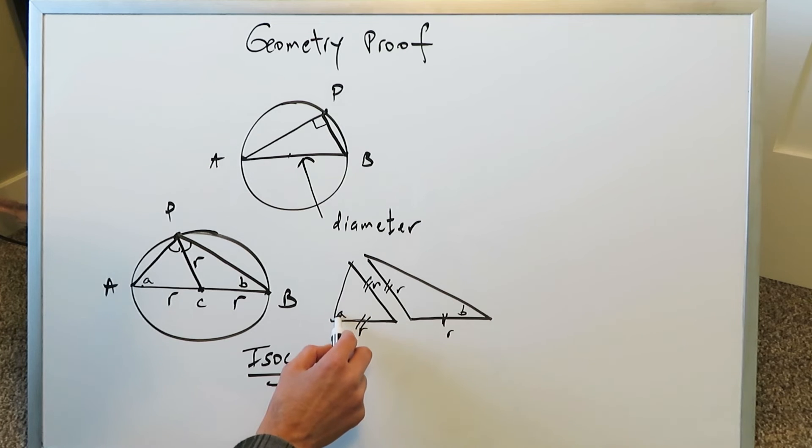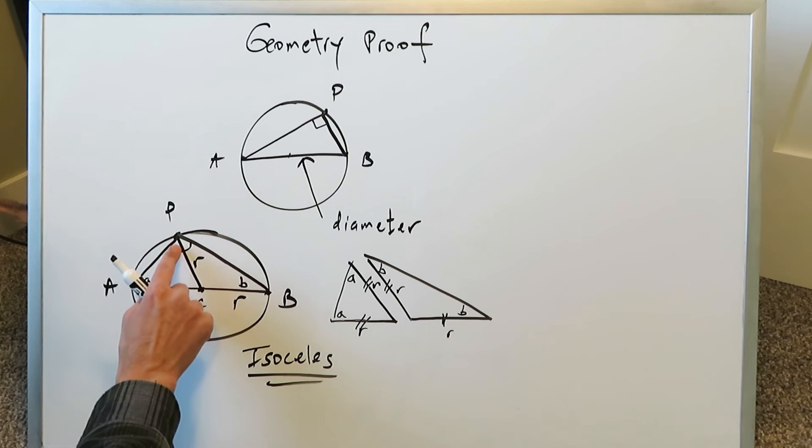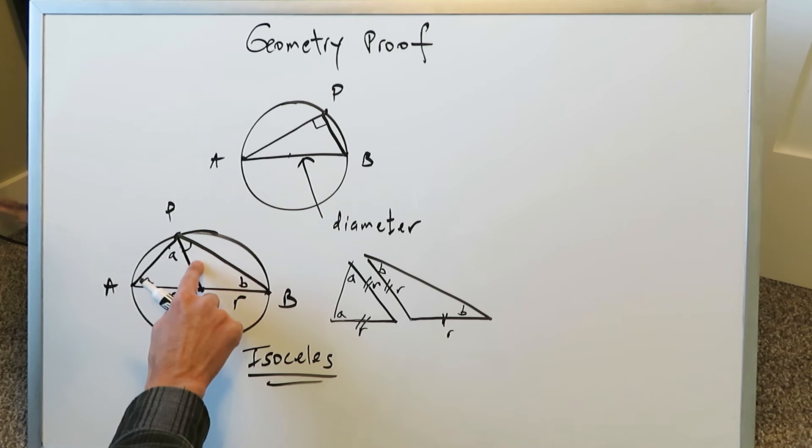If this right here is angle A, then this here must be angle A. If this right here is angle B, this here must be angle B because you have two equal sides. Therefore, you must have two equal angles. Now we've demonstrated to you that this right here must be angle A, and we've generated and demonstrated that this here is angle B.